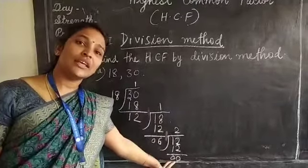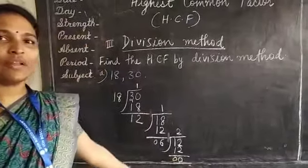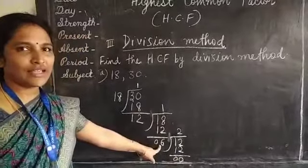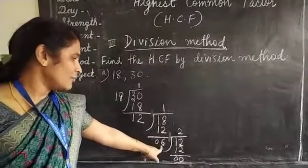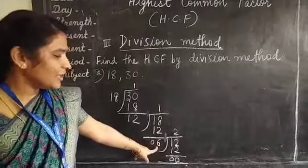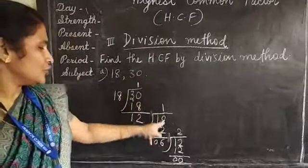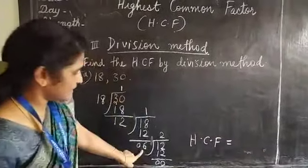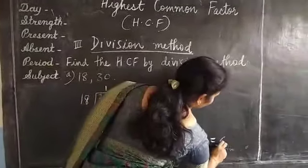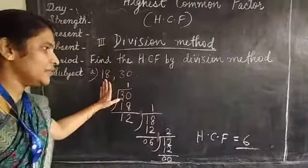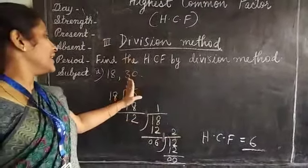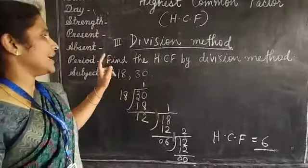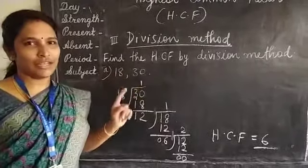Then the question is, what will be our answer? What will be our HCF? Our HCF will be the last divisor. Then in the last step, with which number you divided, that will be the HCF of these two numbers. Then which is HCF? HCF is 6. We can divide 18 with 6 and we can divide 30 also with 6. 6 is the common divisor for 18 and 30.